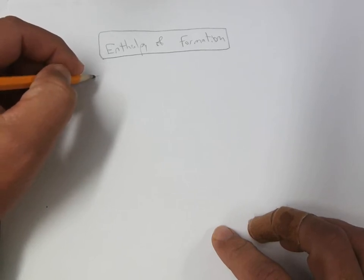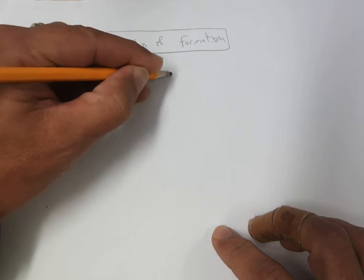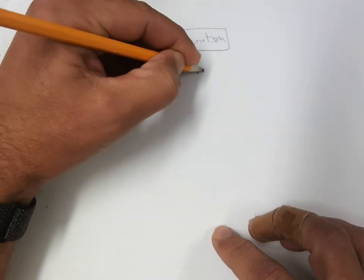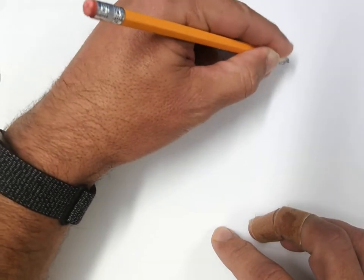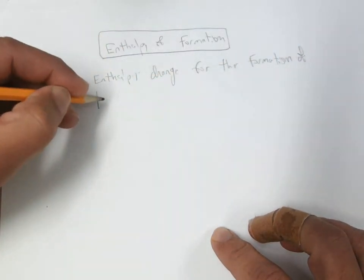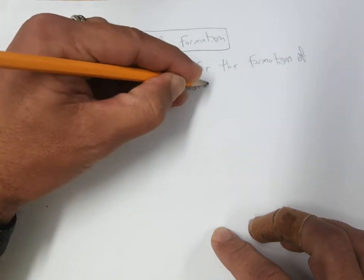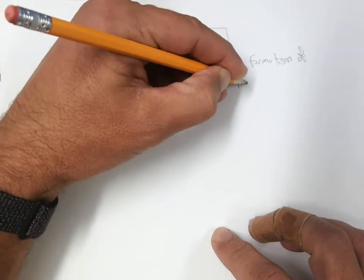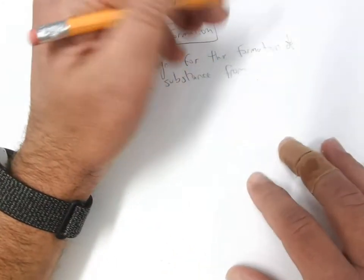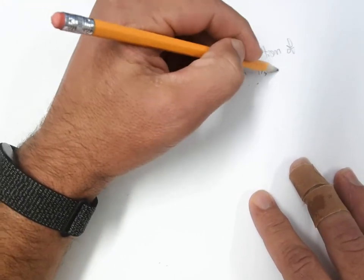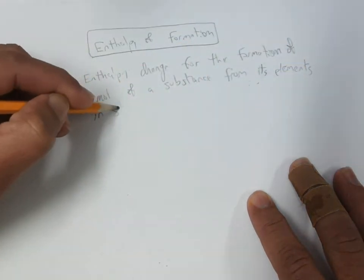The enthalpy of formation is the enthalpy change for the formation of one mole of a substance from its elements in their standard states.